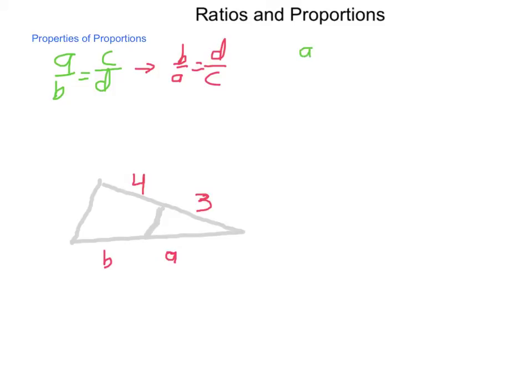Next, start with our same point, a to b equals c to d. Then, going through, we can change, we can swap out our means. So, what we will have is a to c equals b to d.